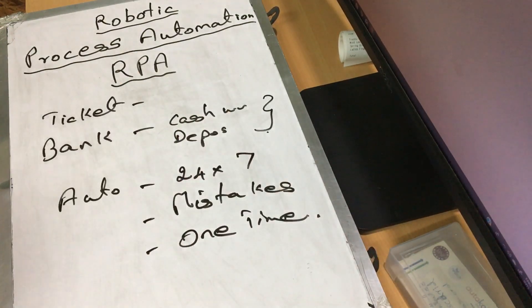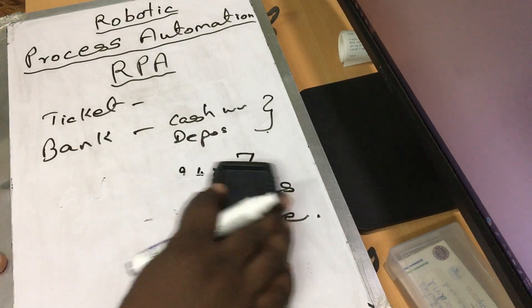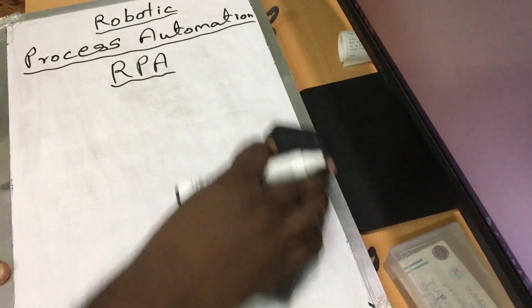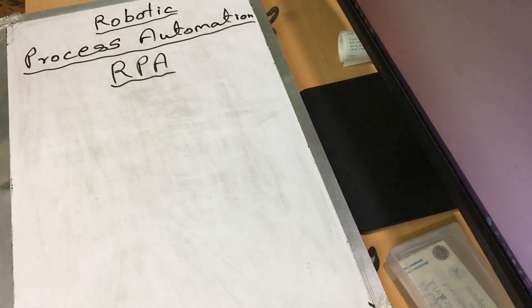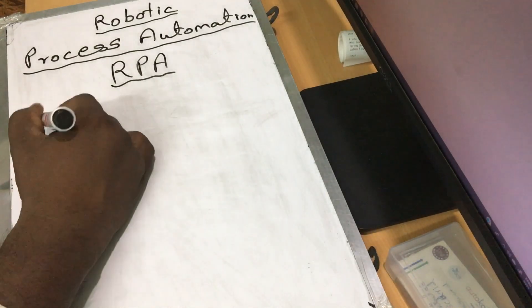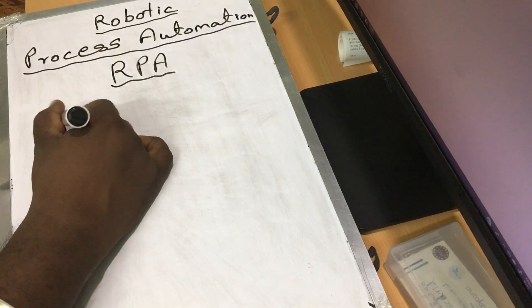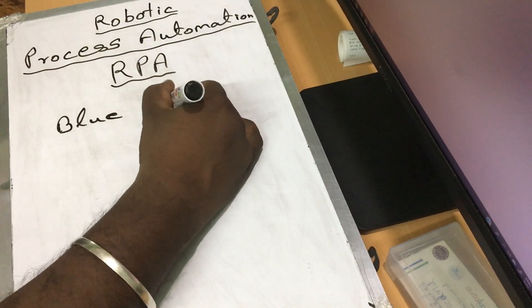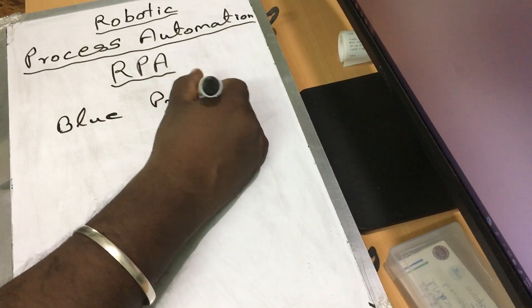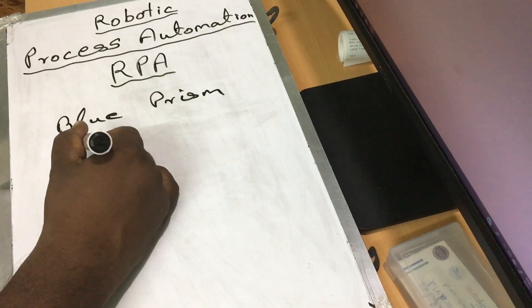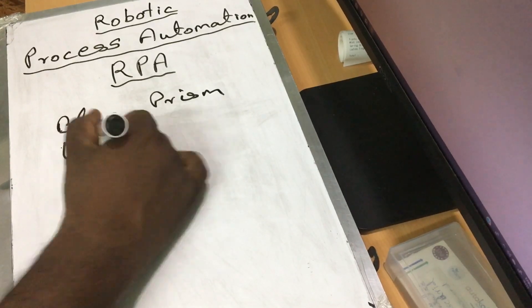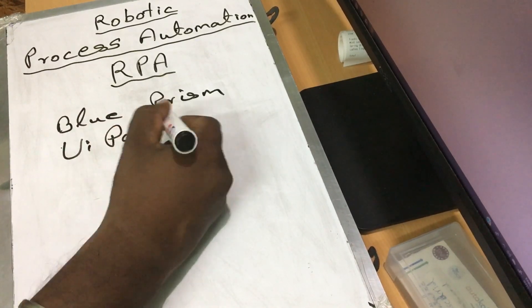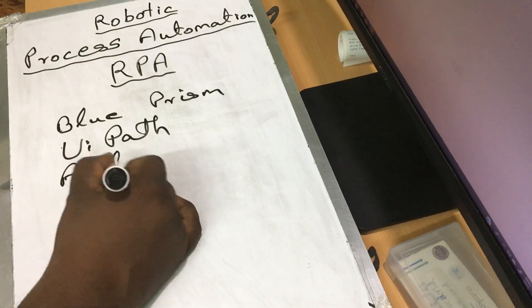So after automation, you are using 3 tools. There are 3 tools: Blue Prism, UiPath, and Automation Anywhere.